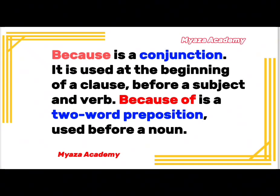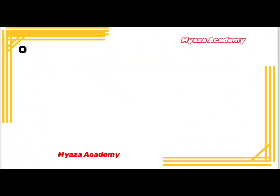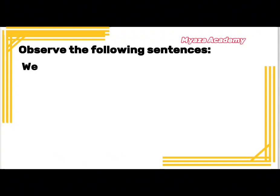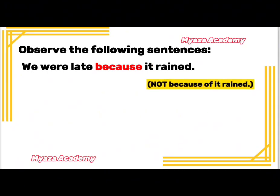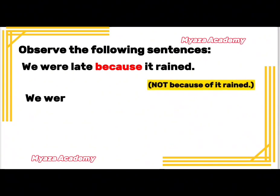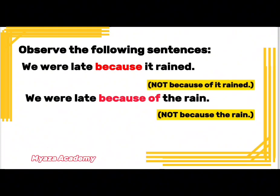Now we are going to observe the following sentences so that you understand. First: 'We were late because it rained.' Note that 'because of it rained' would be wrong. The correct alternative with 'because of' is: 'We were late because of the rain.'